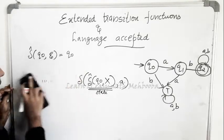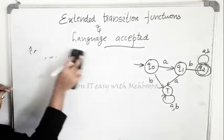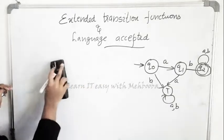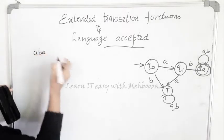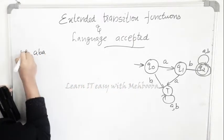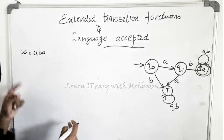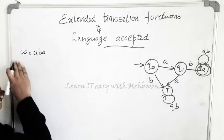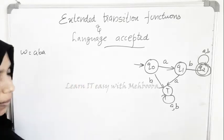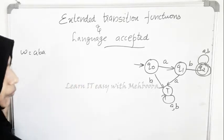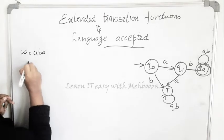For this example, I am going to check whether the string ABA will be accepted by this automaton — checking that with the help of the extended transition function.